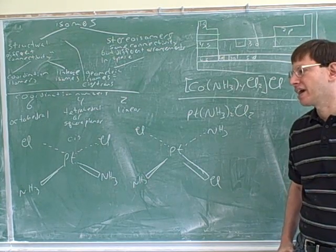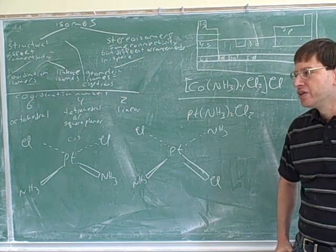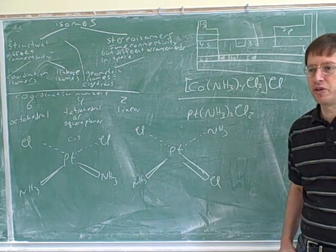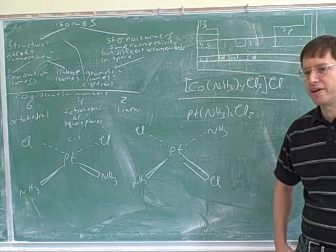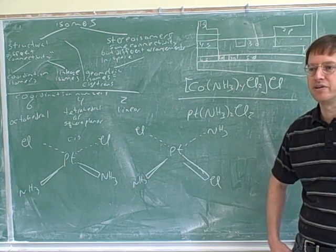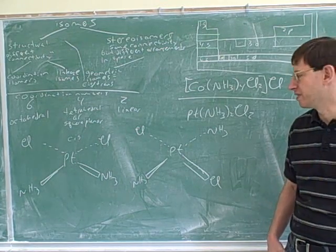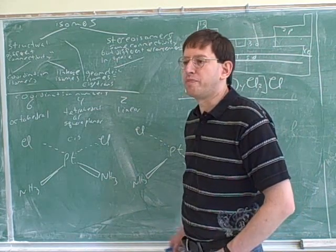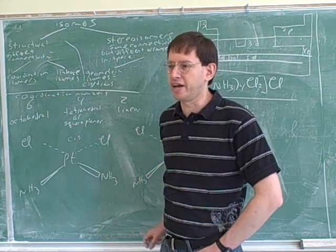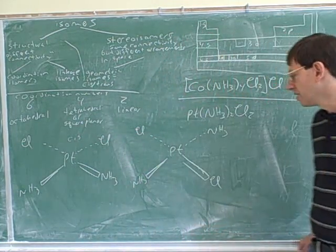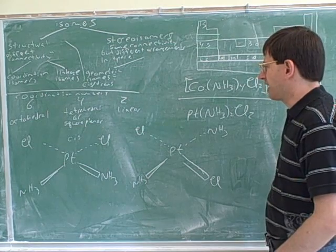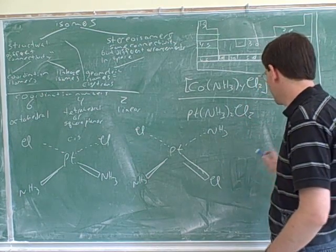The dxy, dyz, and dz² are the d orbitals — that's crystal field theory, which is separate from stereoisomerism. Those are the two big hard topics in this chapter: stereoisomerism and crystal field theory. You don't have to think about the d orbitals at all for stereoisomerism. The d orbitals are what hold the lone pairs, but we're not taking lone pairs into account in the geometry — we're just taking into account where the ligands are.